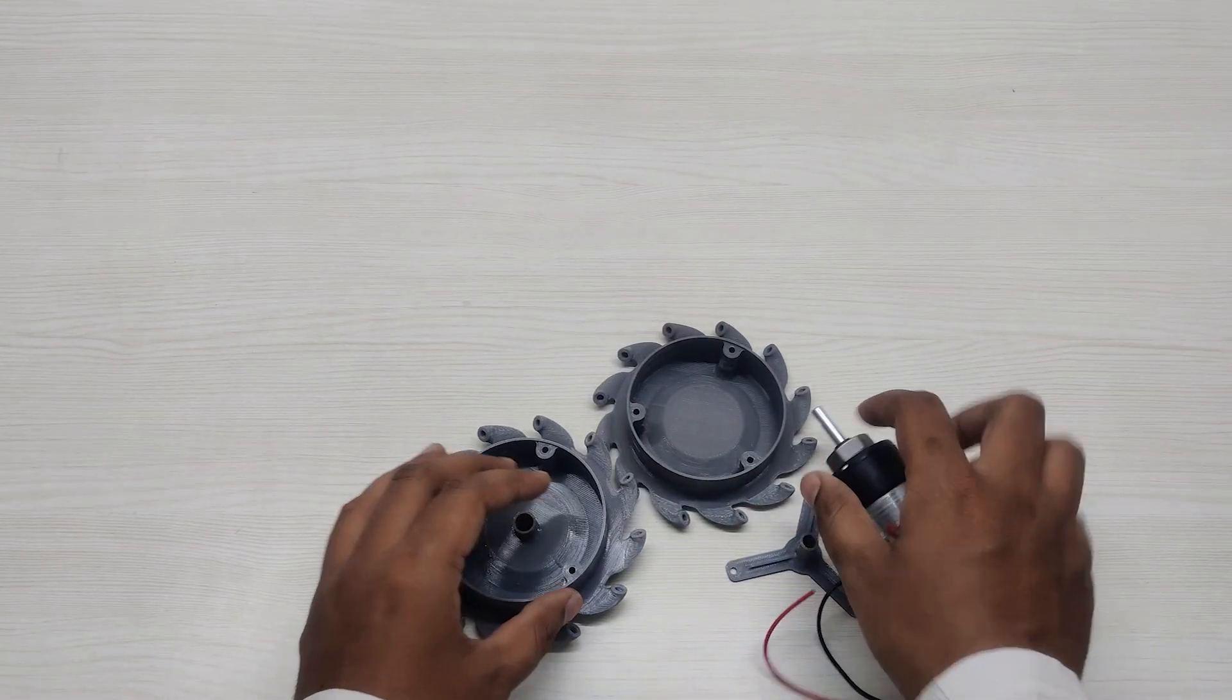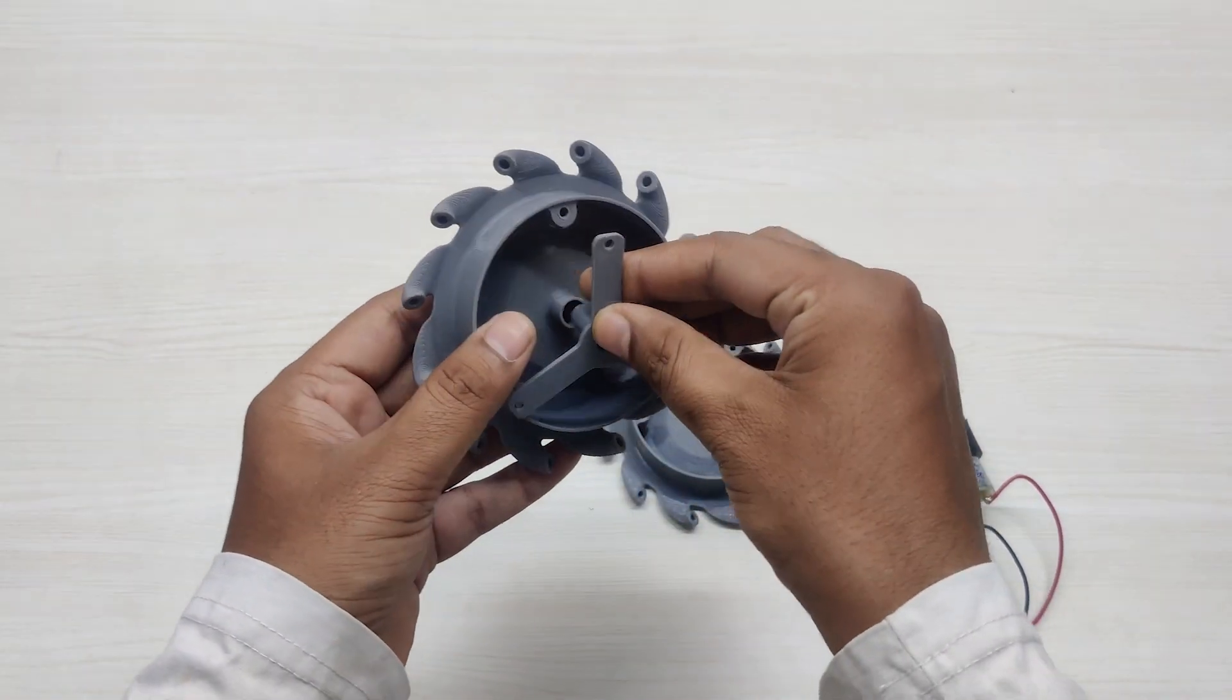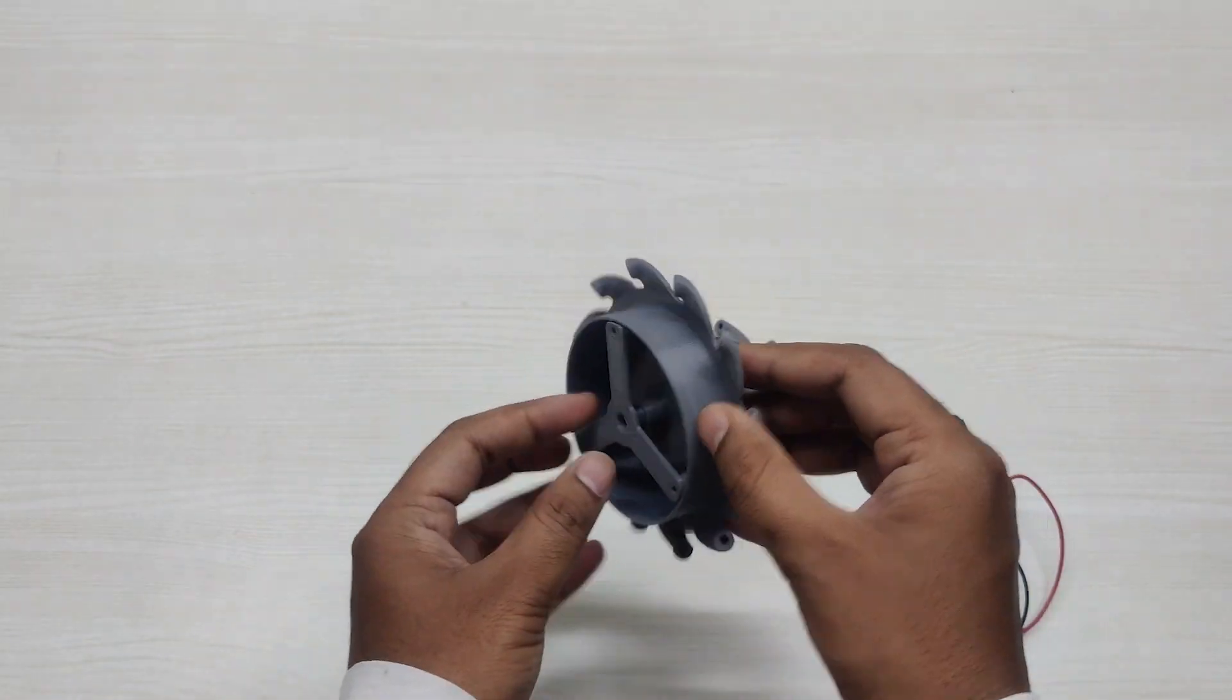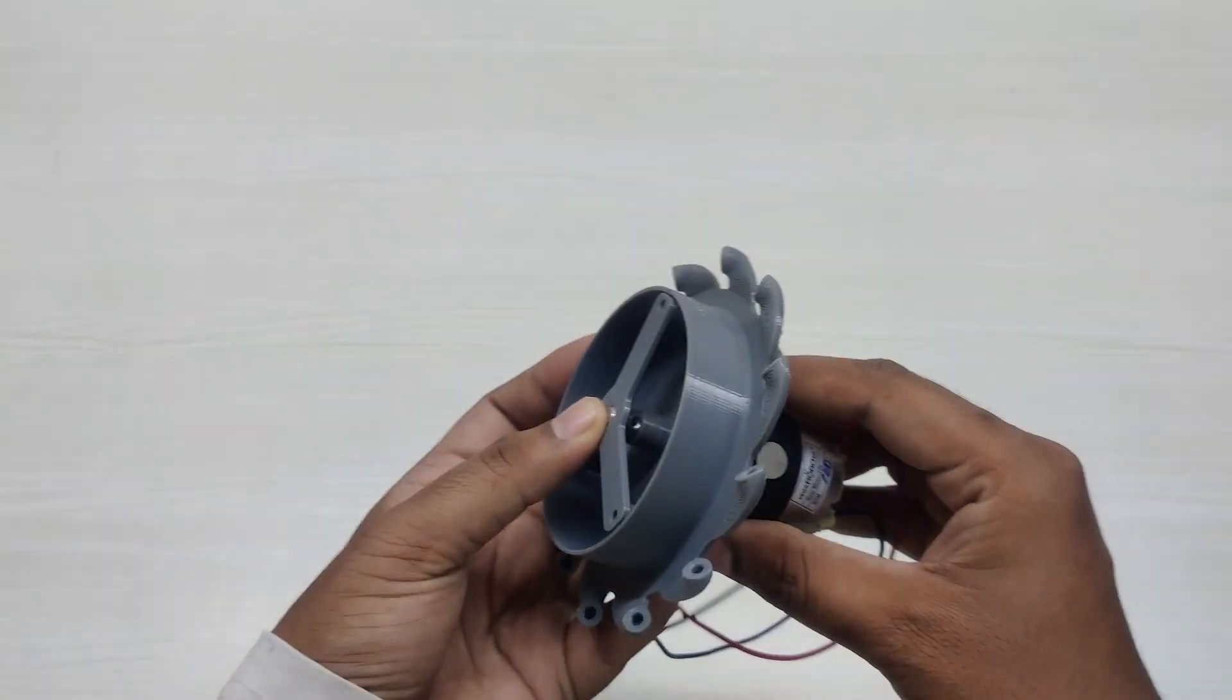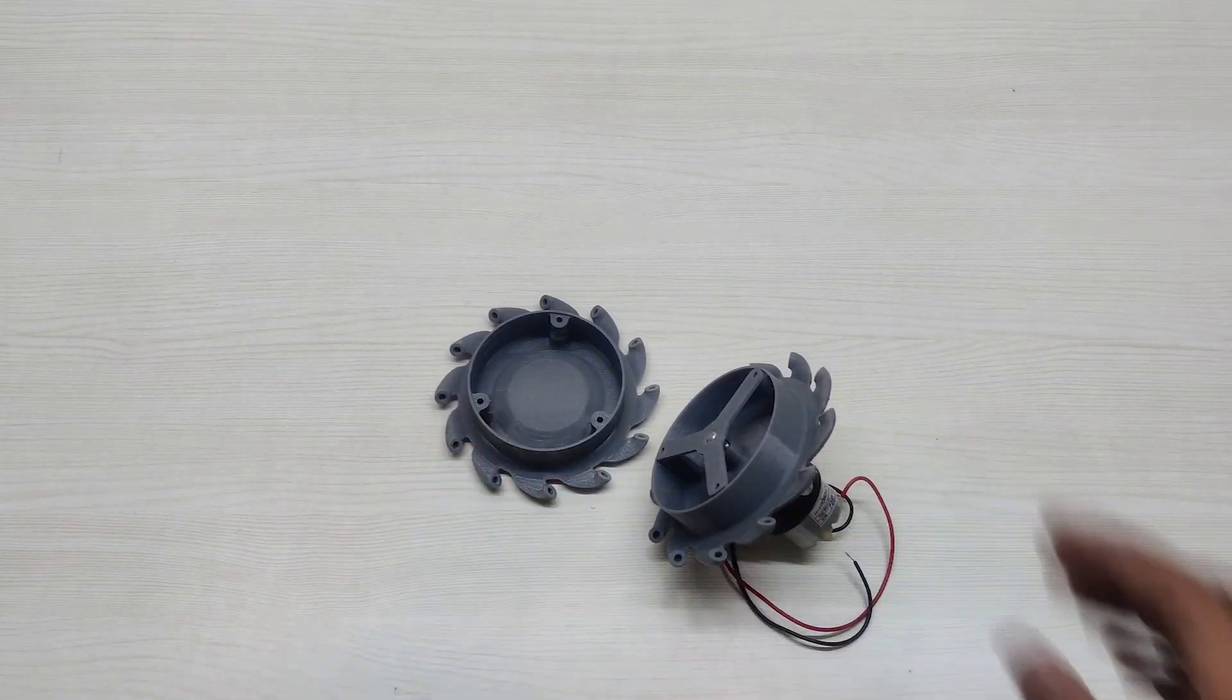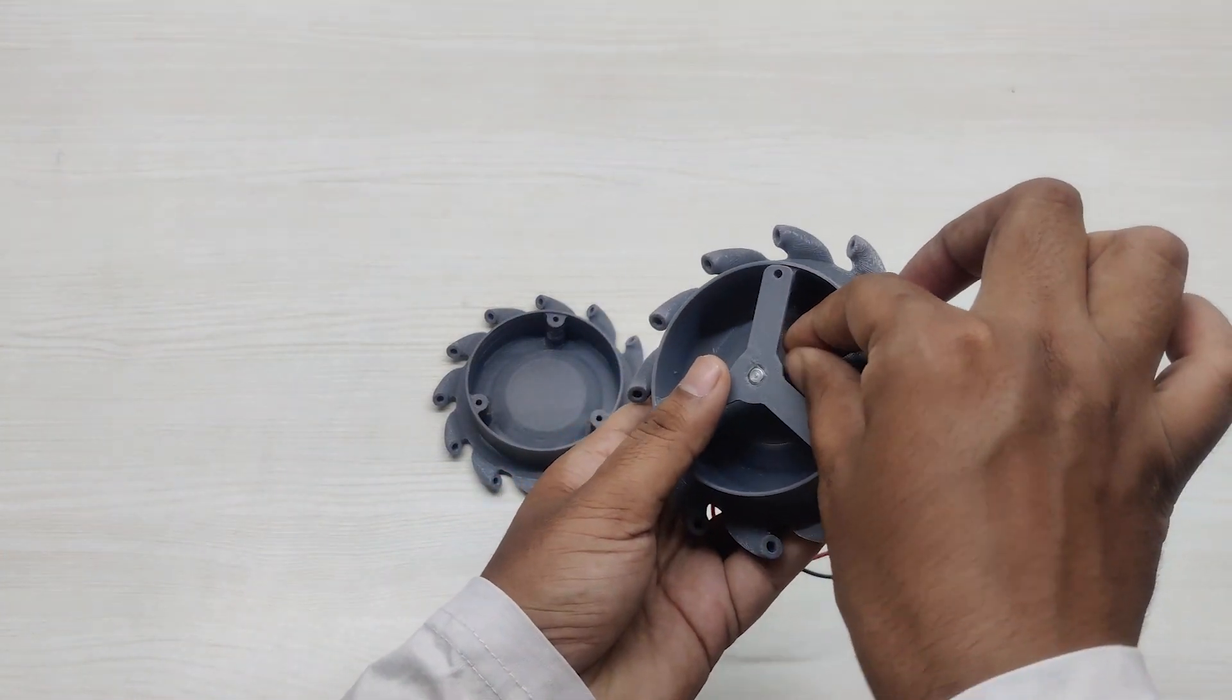First connect the wire connector with the bottom part of the wheel, and then insert the motor in the wire connector. Make sure that the whole alignment of the motor shaft and the wire connector is proper. Then insert an M3 bolt of 10mm inside it.